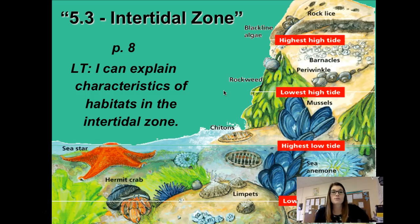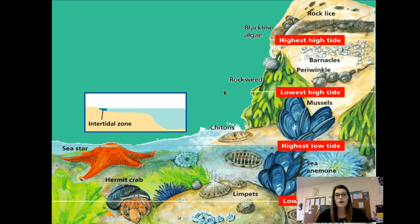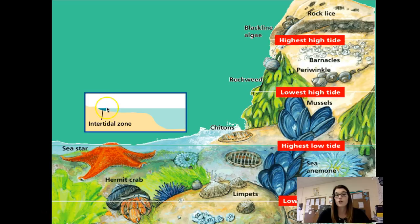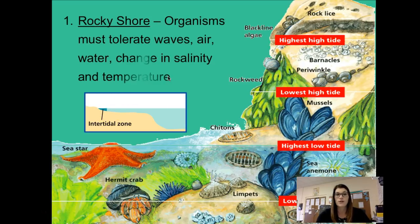By the end of these notes you should be able to explain different characteristics of the different habitats in the intertidal zone. If we're standing on the beach and go down to the continental shelf, the intertidal zone is just that small area right here — from the highest high tide all the way down to the low tide.